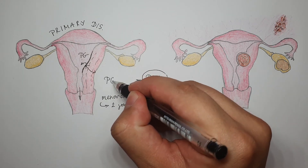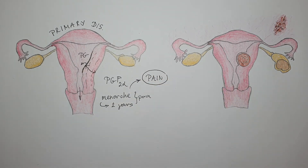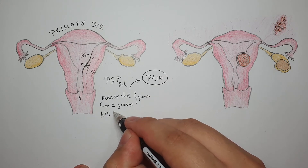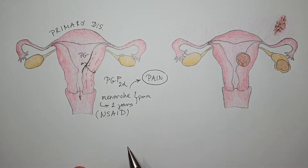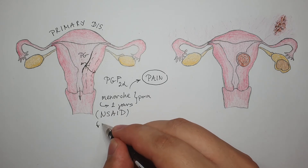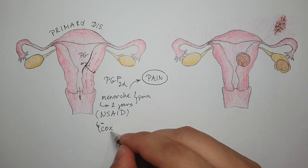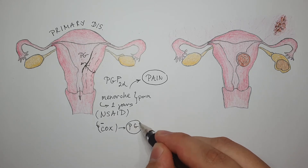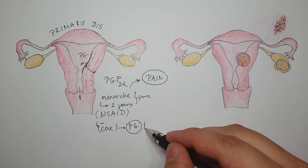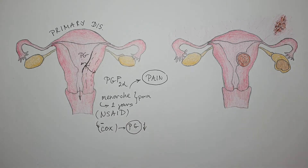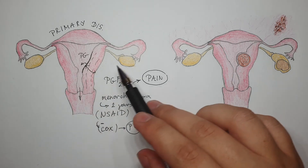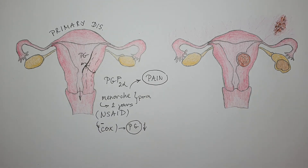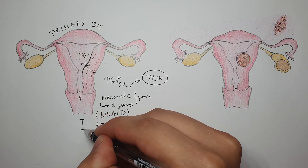Another support for this theory is that NSAIDs work very well in treating primary dysmenorrhea. This is logical because NSAIDs inhibit the enzyme cyclooxygenase, and cyclooxygenase is needed for prostaglandin production. If it is inhibited, we don't produce as many prostaglandins — which is why NSAIDs are effective in these cases. This is the basic and simple explanation of primary dysmenorrhea.